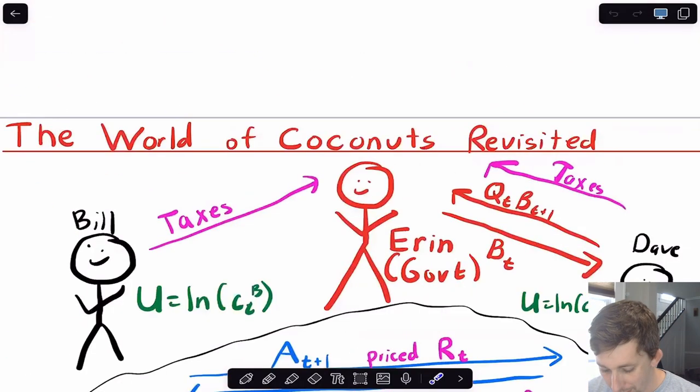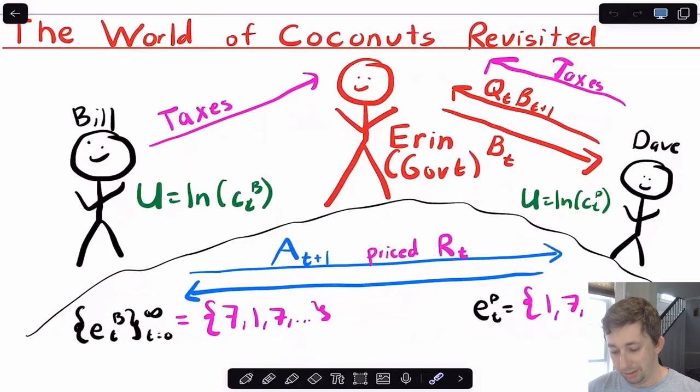So first, let's go back to the world of coconuts with Bill and Dave on this island. Now, a lot of things about Bill and Dave are going to be exactly the same. They still have a utility function, which is just the natural log of their coconuts. They still have an endowment, which varies with time. They can still trade assets with each other priced at RT.